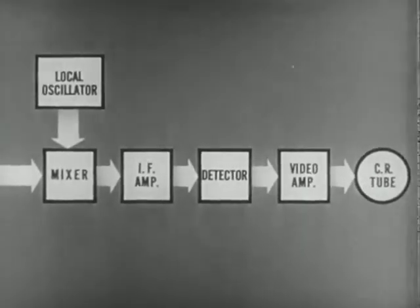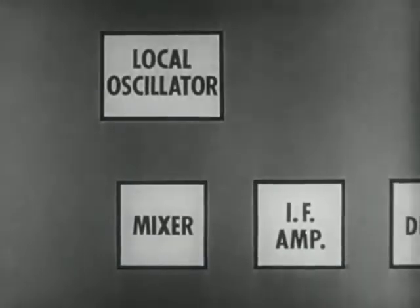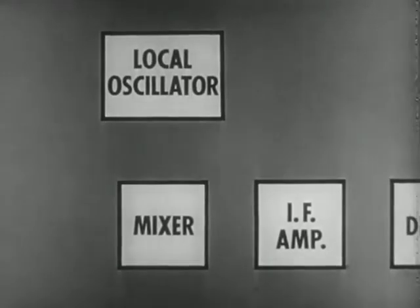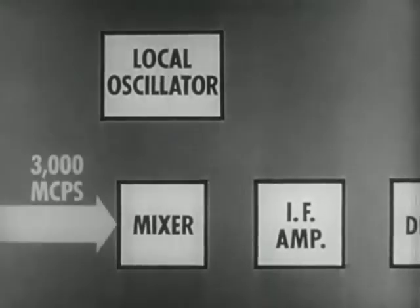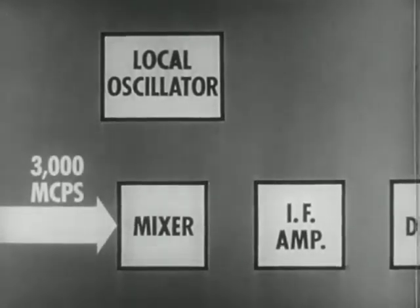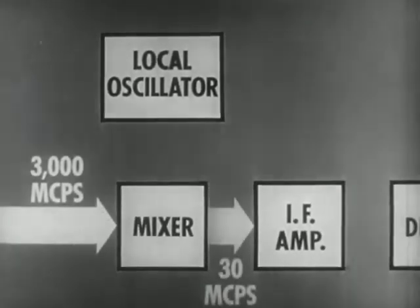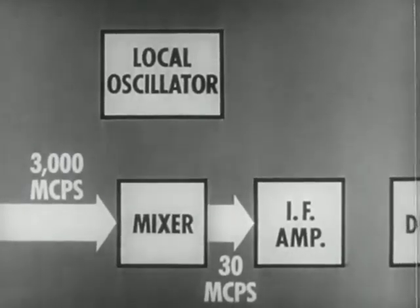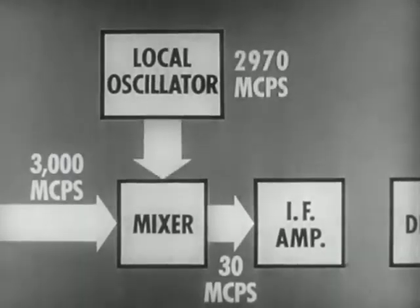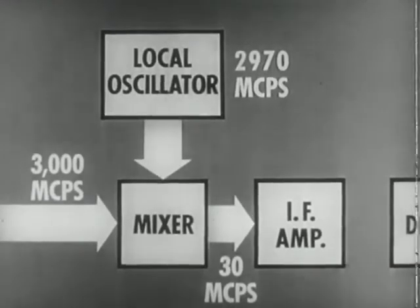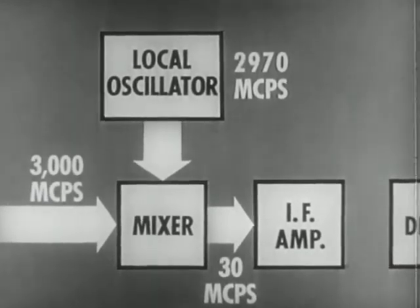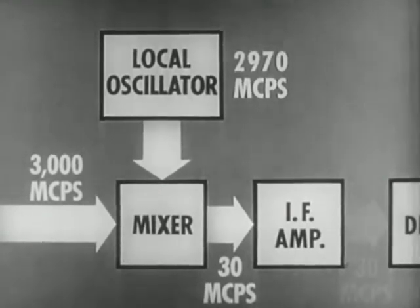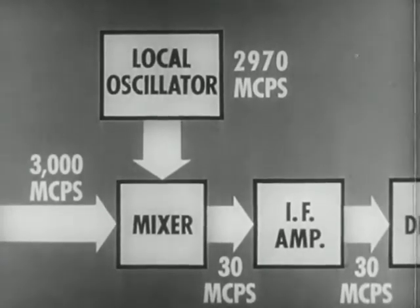Since the intermediate frequency is only a fraction of the incoming frequency, the local oscillator must operate at almost the same frequency as the transmitter. For instance, at 10 centimeters, or 3,000 megacycles per second, where the IF is usually 30 megacycles per second, the local oscillator must operate at 2,970 megacycles per second. And it must have very great frequency stability, since the IF amplifier is designed to pass only the one frequency.